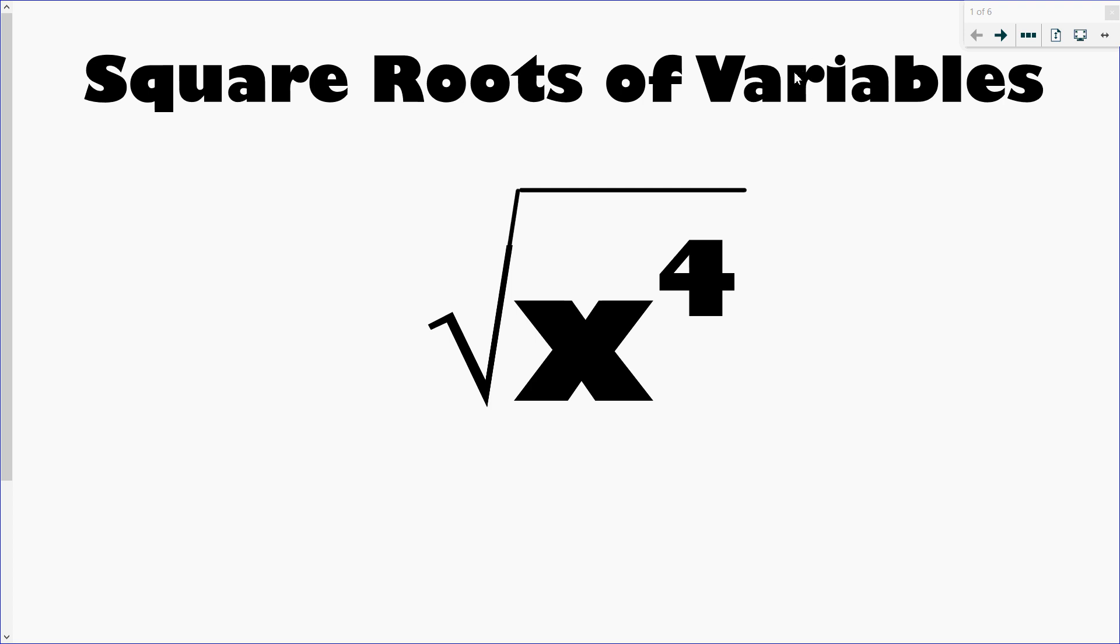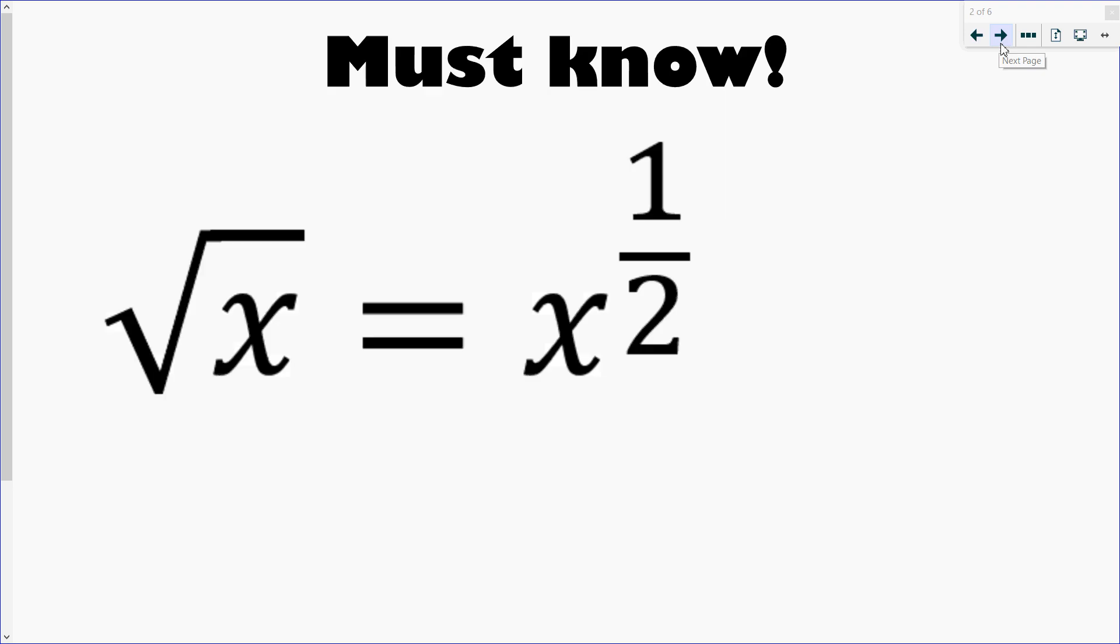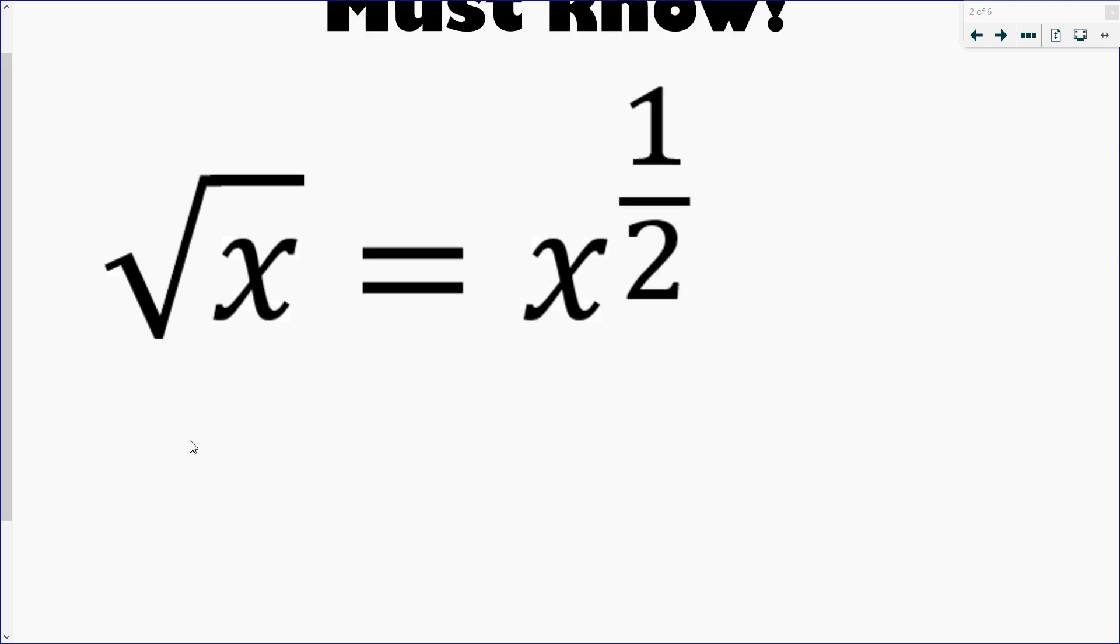All right, so first thing we need to remember is that the square root actually just means x to the 1 half. So anytime you have a square root no matter how simple it might be, all it actually means, so if you have 9, the square root of it really you can rewrite that as 9 to the 1 half. So square root actually means exponent of a half.